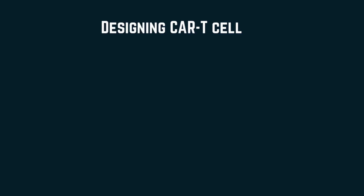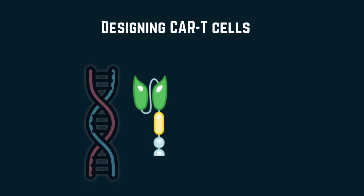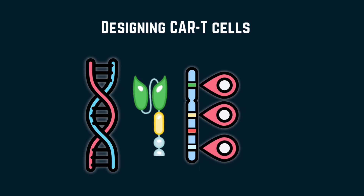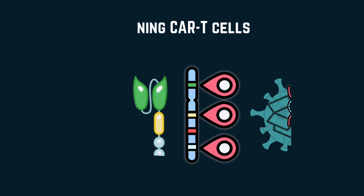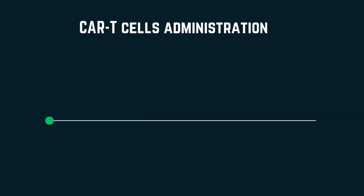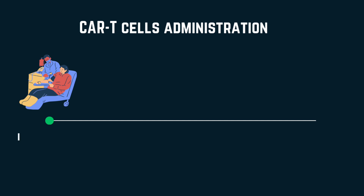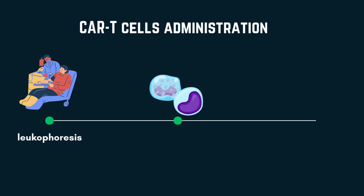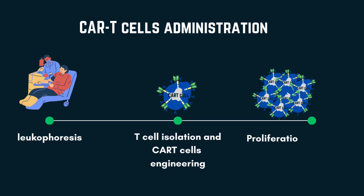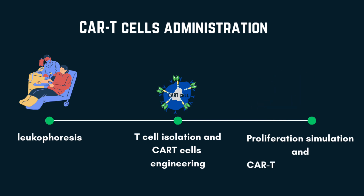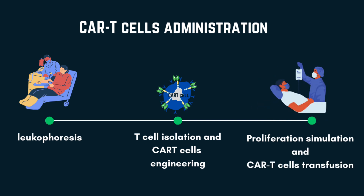That sounds simple, but is it really? The entire receptors are made of proteins, so we take a segment of DNA that encodes the different parts mentioned earlier, then use a disarmed virus as a carrier to deliver them into T cells. For patients, first we must take white blood cells from the patient's blood through a process called leukopheresis. Then inside the lab, T cells are isolated from white blood cells and genetically modified to target a specific cancer antigen. The modified T cells are stimulated to proliferate into millions of cells, and these CAR T cells are then transfused back into the patient to fight against cancer.